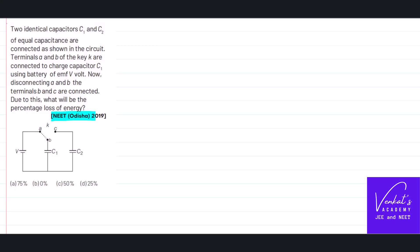This is a NEET 2019 question on capacitors. It says two identical capacitors C1 and C2, though they were named as C1 and C2, they're actually the same. You can call them as C and C itself.